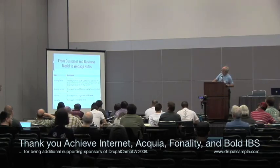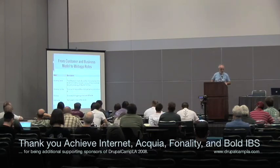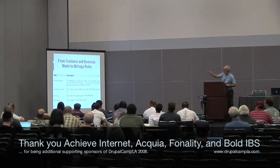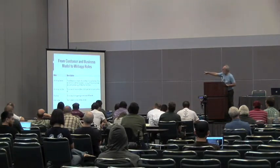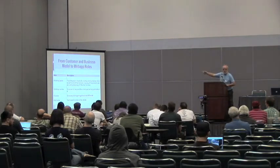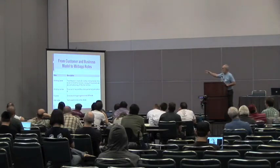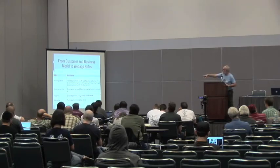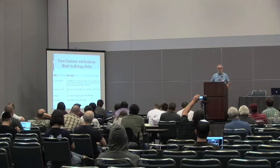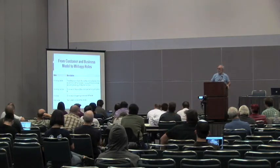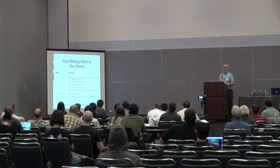Once you've identified the customer, you go from the business model to web application roles. For the literary workshop we have: workshop leader, workshop member, publisher, and webmaster. The leader runs the workshop, decides who to accept, monitors whether members comply with requirements, and can do everything members and publishers can do. A member actively participates in the workshop. A publisher browses content and publishes a magazine on the site. The webmaster does technical administration.